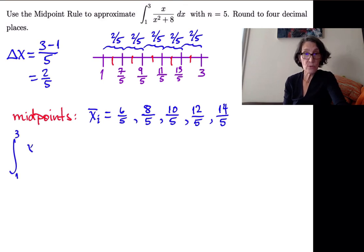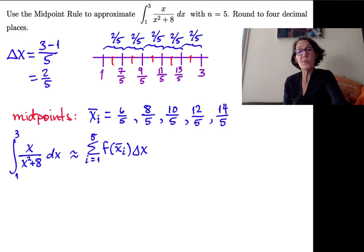And so the midpoint rule says the definite integral from one to three of x over x squared plus 8 dx is approximately equal to the finite sum from one to five of the areas of these rectangles. So f of xi bar times delta x. And so now I'm going to write out the finite sum of all the f of xi bars, and I'm going to pull the delta x out using the distributive property. So the sum looks like this.